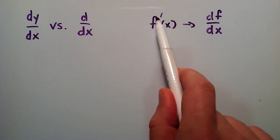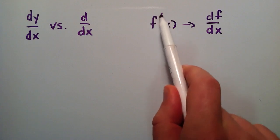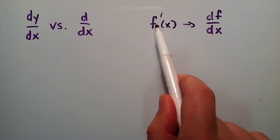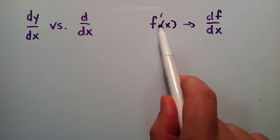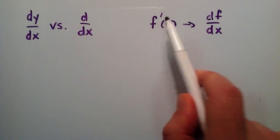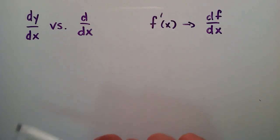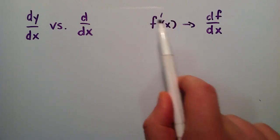It's basically this f prime here, this little dash, basically means that you're taking the derivative of a function f, f of x. So this little dash means you're taking the derivative of that, and this is Newton's notation.